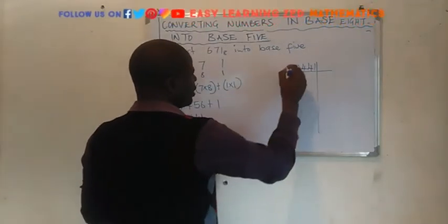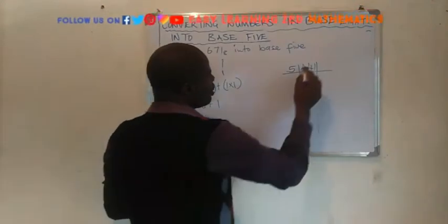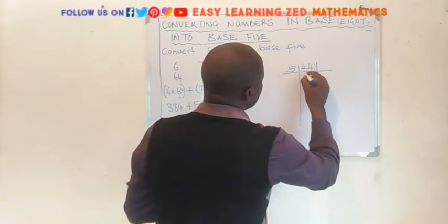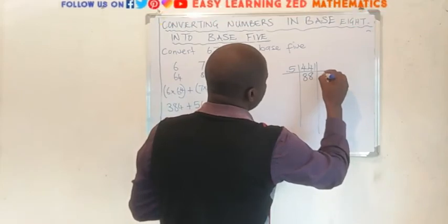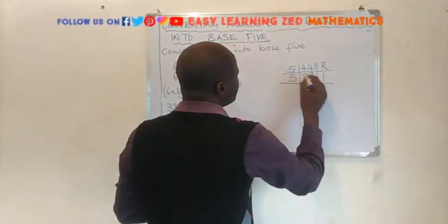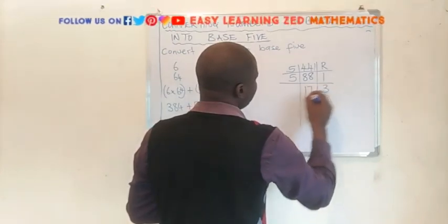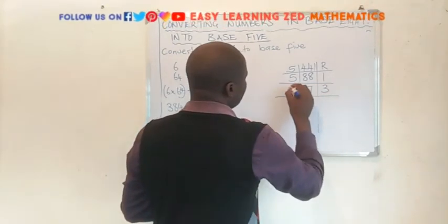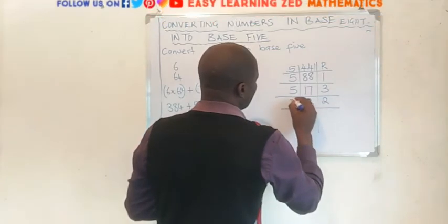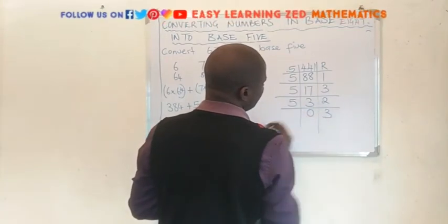We are going to put 5 here. How many times can 5 go into 441? It will go 88 times, remainder 1. We are putting arrows to show our remainders. Then we divide 88 by 5, it's going to give us 17, remainder 3. Then we divide 17 by 5, it's going to give us 3, remainder 2. Then 3 divided by 5 gives us 0, remainder 3.